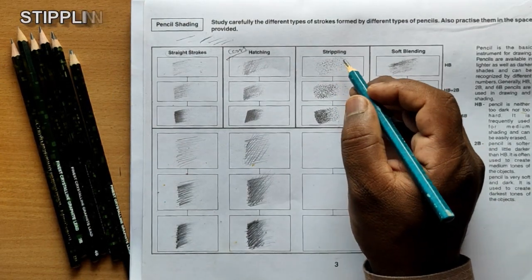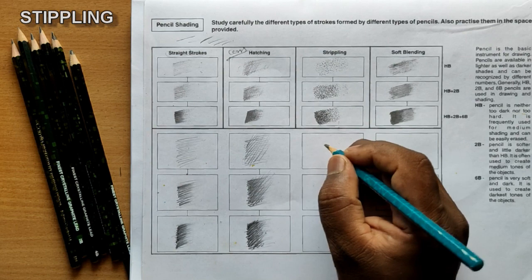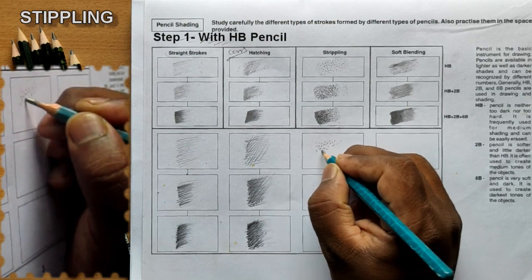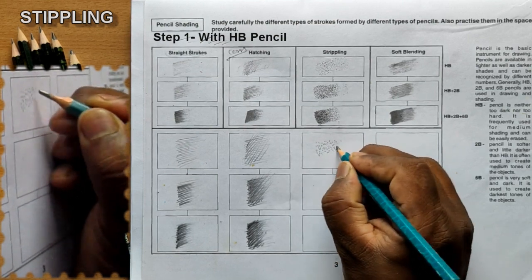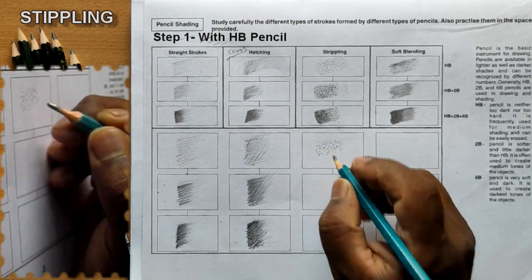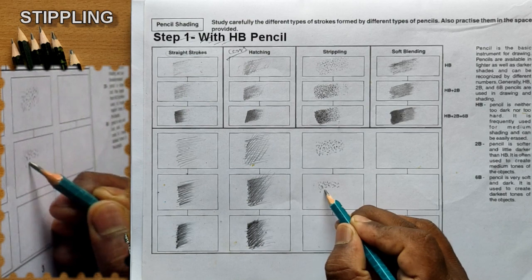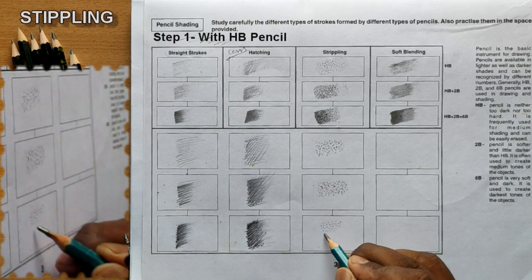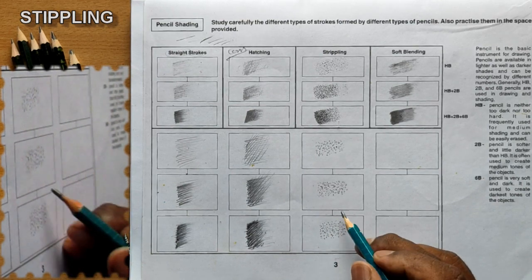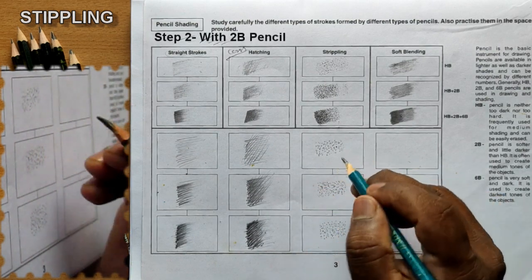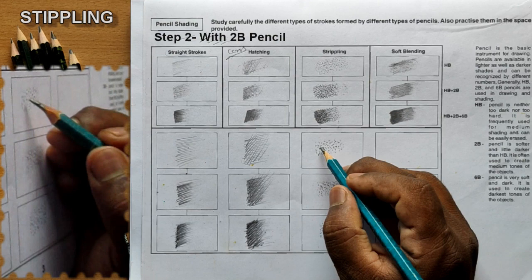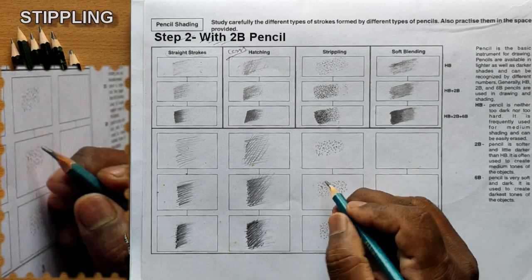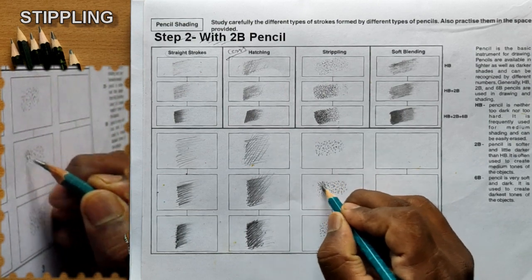The third method is stippling. This method is formed by only dots. Take an HB pencil and give a few dots in whatever form you want — this is the first step. For the second step, take a 2B pencil. In the first step you stipple with the HB pencil with more gap between the dots; in the second step you reduce the gap between those dots using the 2B pencil.